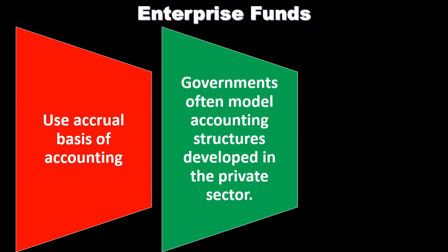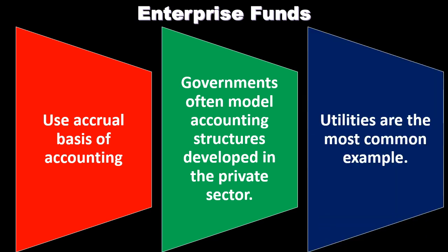Governments often model accounting structures developed in the private sector. Enterprise funds are the most similar to private sector because we have customers of the government, and therefore operate in a fashion very similar to a for-profit organization. For-profit organizations based on market structures typically have very good models to follow, so we can benchmark our accounting system against them much more so than for other governmental entities. This is part of why differences arise in governmental accounting — the differences in how accounting must be structured relative to governmental objectives — but here there is much more similarity given the type of fund.